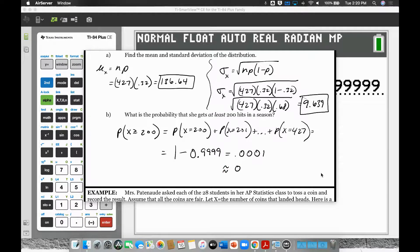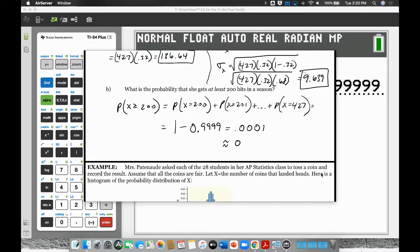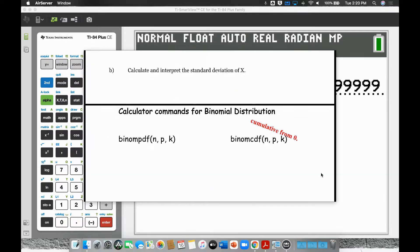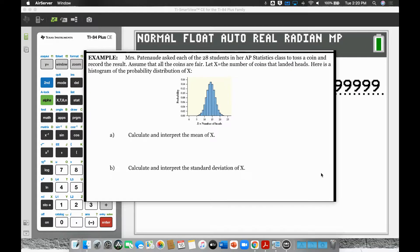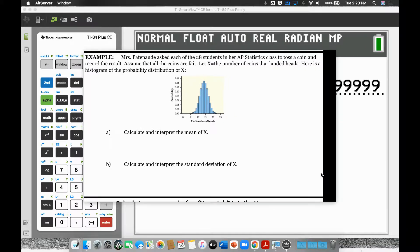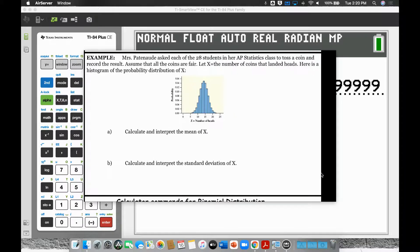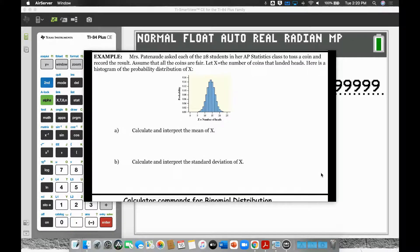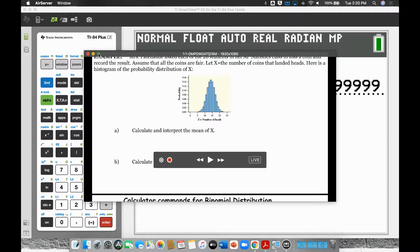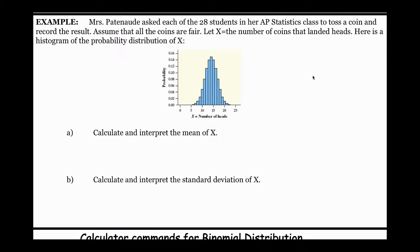If it did happen in real life, that would mean she's not really a 32% hitter — she's better than that, or it was an outlier year. Something happened — it was an outlier.